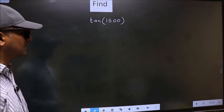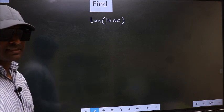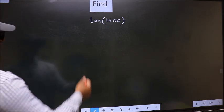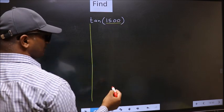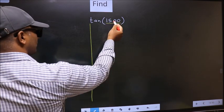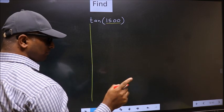To find tan(1500°), we should follow this method. See, here we have 1500. Now we should check - 1500 lies between which two multiples of 180?